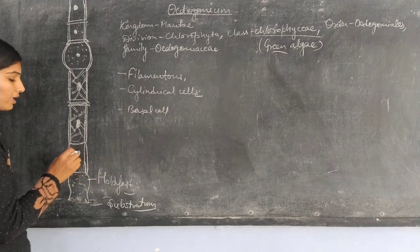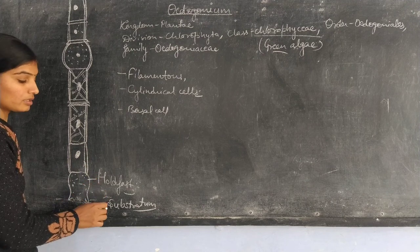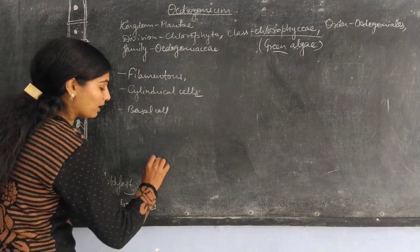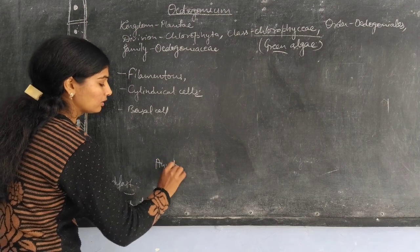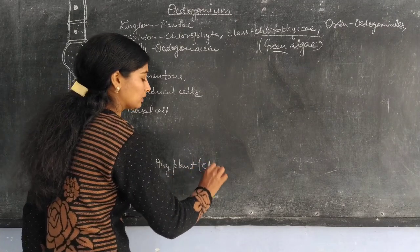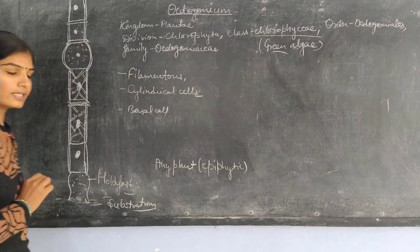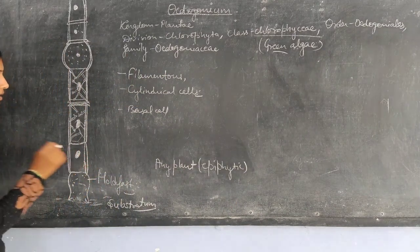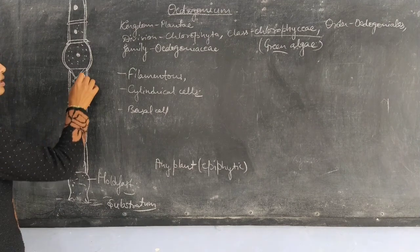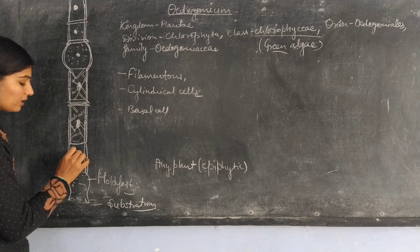This holdfast is attached to the substratum, and the substratum may be a plant. These cells are the vegetative cells of Oedogonium. These vegetative cells have a single nucleus.